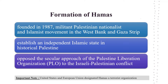In the meantime, Hamas was founded in 1987 as a militant Palestinian nationalist and Islamist movement in the West Bank and Gaza Strip. Hamas was formed with the objective to establish an independent Islamic State in historical Palestine. Hamas opposed the secular approach of the Palestine Liberation Organization to the Israeli-Palestinian conflict. The United Nations and the European Union have designated Hamas a terrorist organization because of its armed resistance against Israel.